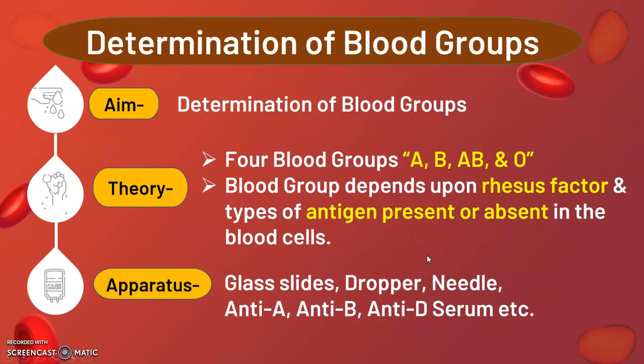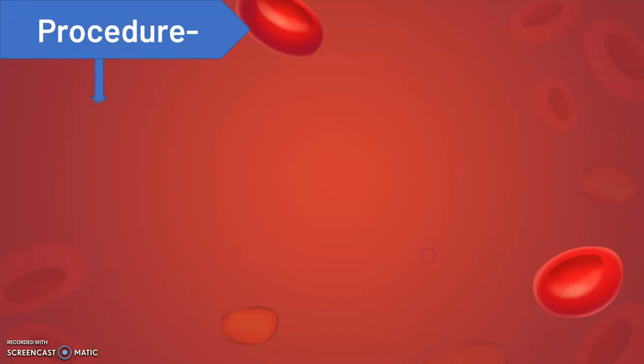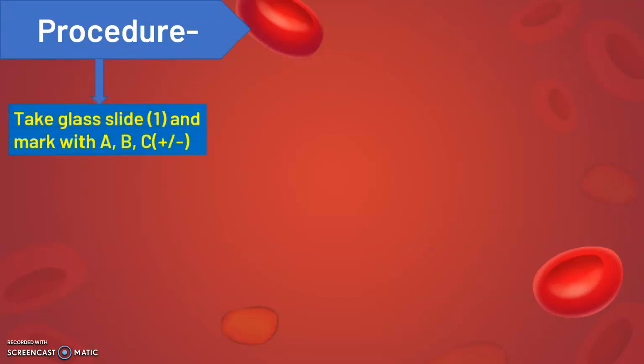With the help of these we will find out our blood group. Now, the procedure: first, clean the glass slide with a napkin and mark it with a sketch pen or marker with points A, B, and C — capital A, capital B, and capital C — leaving some space between the two letters. C stands for determining whether the blood group is positive or negative.